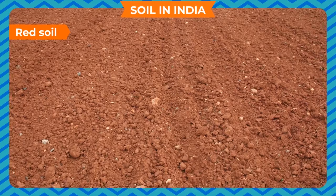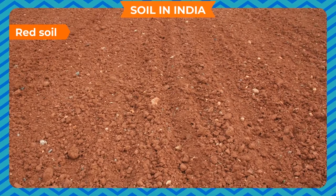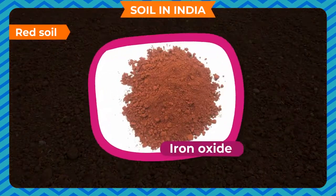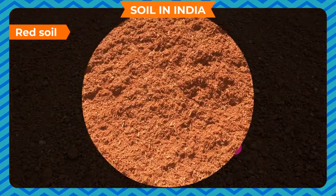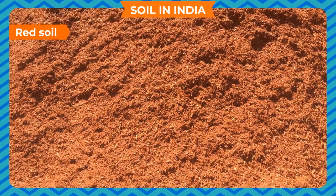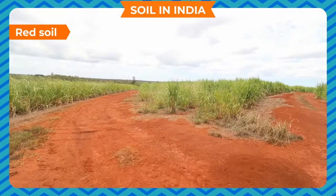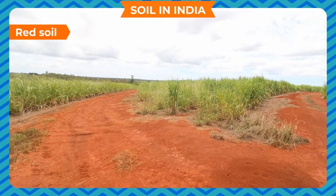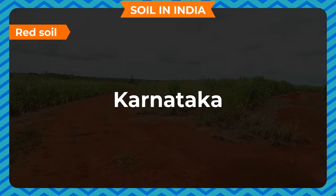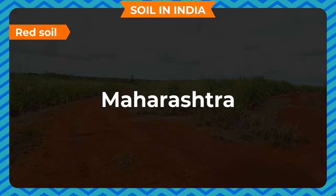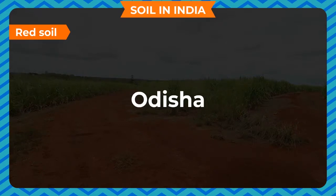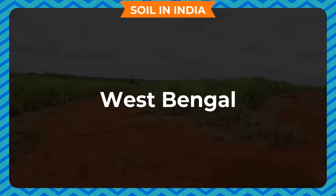Red soil is red in colour due to the presence of iron oxide. It may be gravelly or loamy, and is not very fertile. It is found in Karnataka, Tamil Nadu, Maharashtra, Madhya Pradesh, Odisha, Jharkhand and West Bengal.